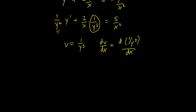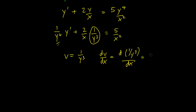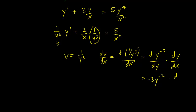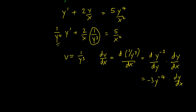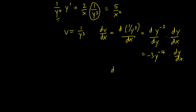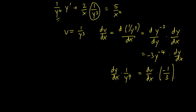So dv/dx is just going to be d(1/y cubed)/dx. We can use the chain rule here — writing y to the minus 3 for convenience — this is equal to d(y to the minus 3)/dy times dy/dx. So d(y minus 3)/dy is just minus 3 y to the minus 4 times dy/dx. This gives us that dy/dx times 1 over y to the fourth equals dv/dx times minus 1 over 3.